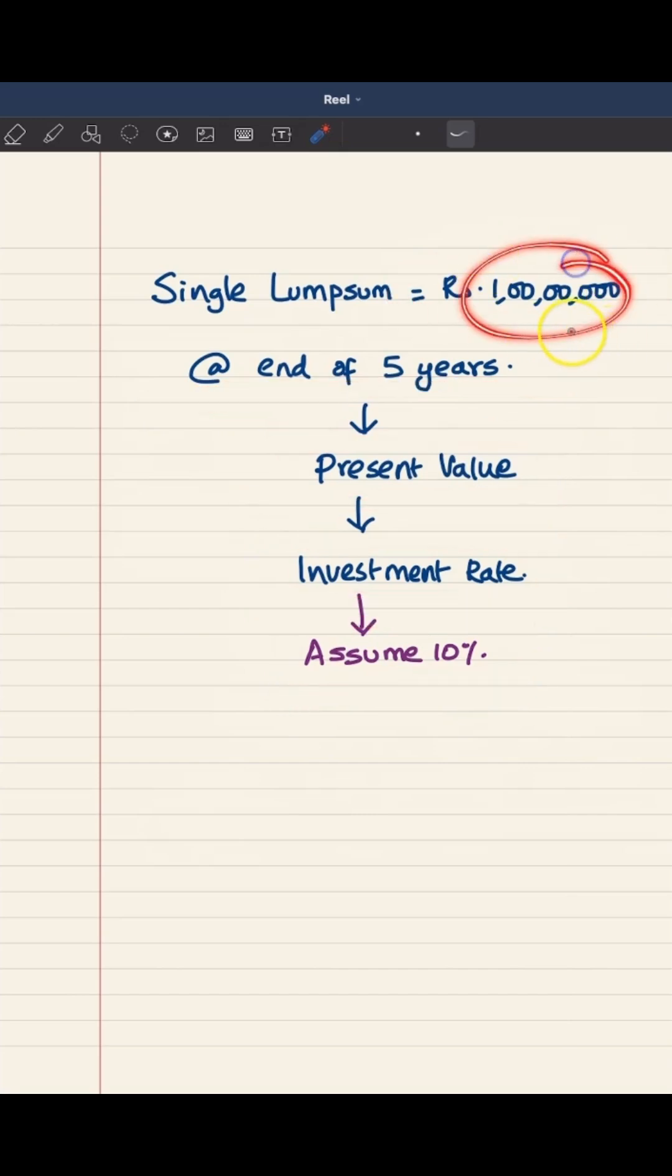So you are basically trying to find out what is the value of this 1 crore now. If you have it now, at what rate will you invest? You need that information. If you have that, you can find its present value.